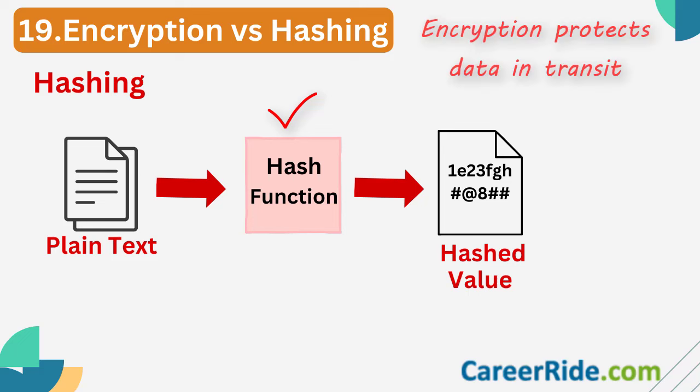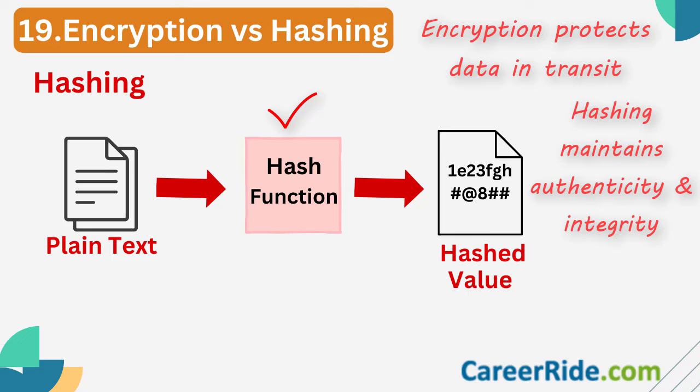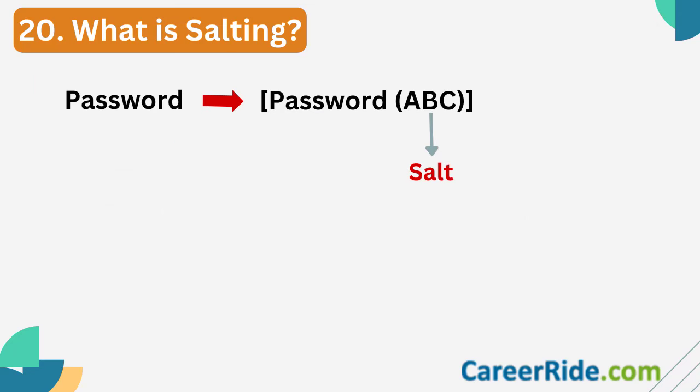Although it is technically possible to reverse-hash something, the computing power required makes it unfeasible. Encryption is meant to protect data in transit, while hashing is meant to verify that a file or piece of data hasn't been altered. Every hash value is unique. A follow-up question could be about salting — salting is a concept related to password hashing where a unique value is added to the end of the password before it is hashed. This adds an additional layer of security and protects the password against brute force attacks.